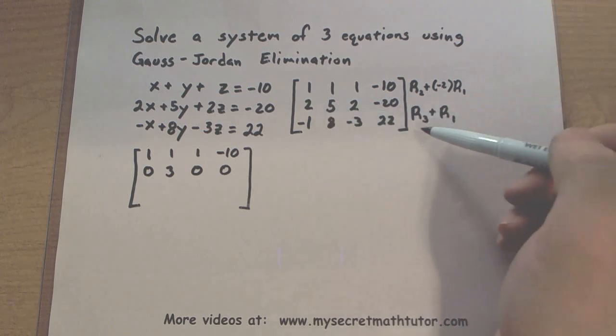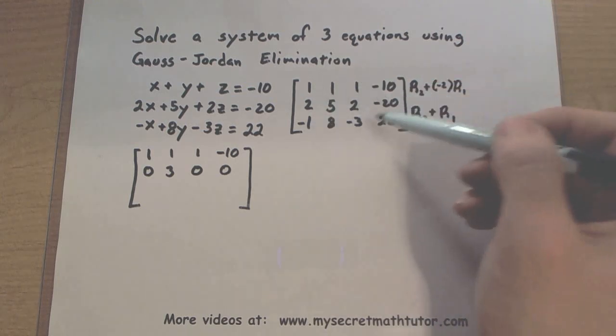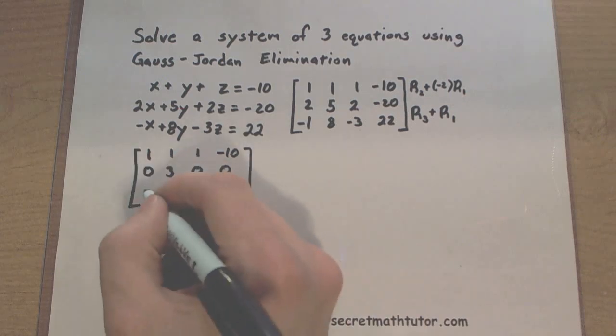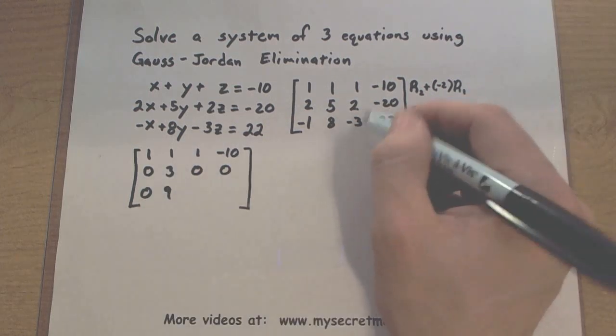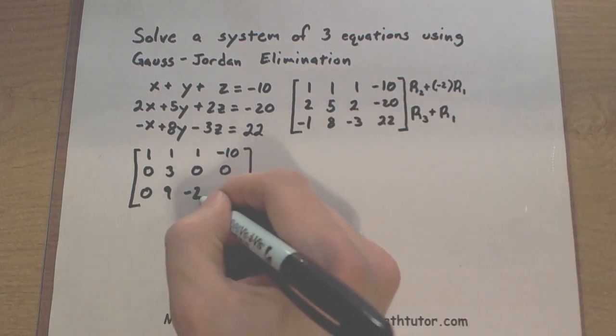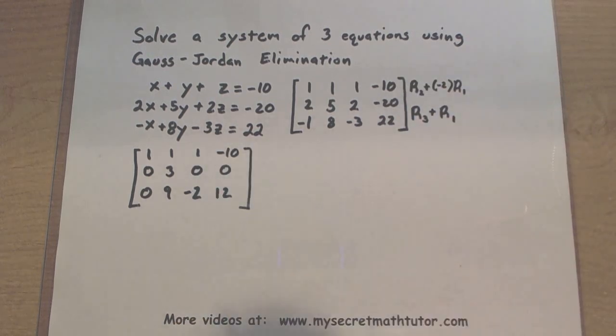Now imagine taking row 3 and adding row 1. So we're going to add those two guys together, and this will become the new row 3. So negative 1 and 1, 0. 8 and 1, 9. Negative 3 and 1, negative 2. 22 and negative 10, 12. So we have this new matrix, and looks like things are going pretty good.